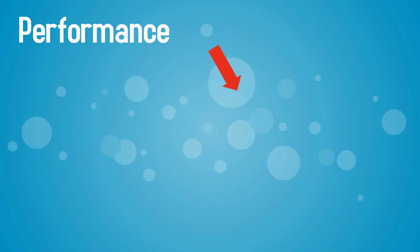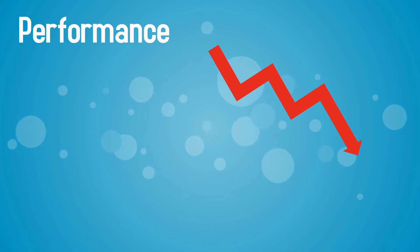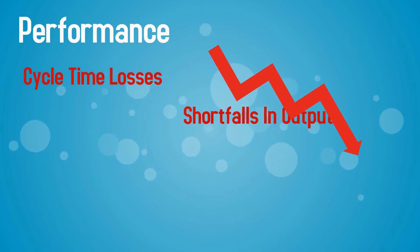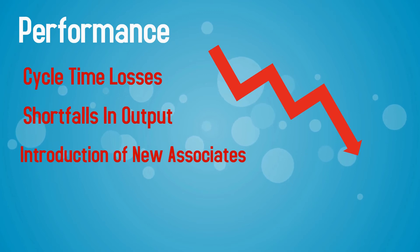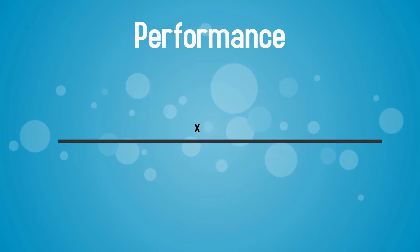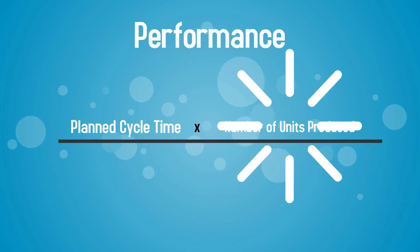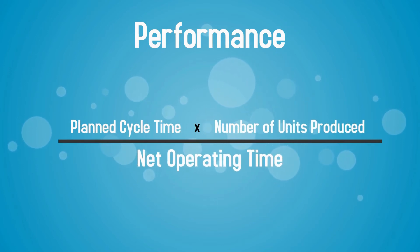A product line's performance factor can be lowered due to events such as cycle time losses, shortfalls in output, and the introduction of new associates. Performance can be calculated by multiplying planned cycle time by the number of units produced and then dividing by net operating time.